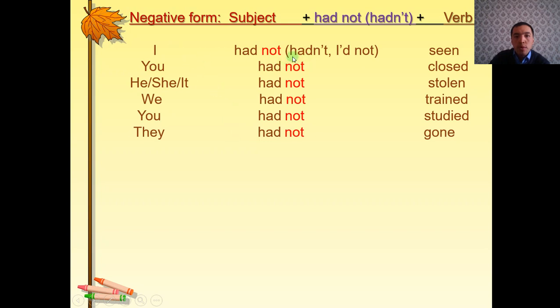We have two choices of contracted forms of the negative past perfect. I hadn't seen. I'd not seen.